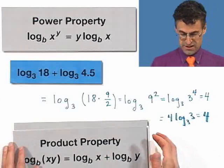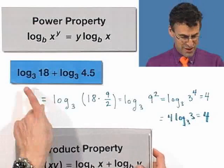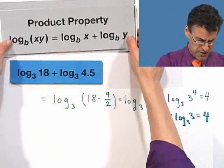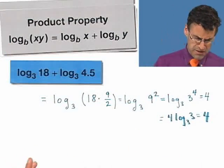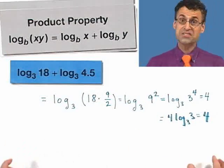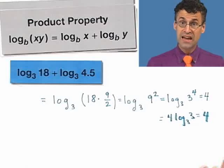So there's lots of ways of getting to it. But all correct roads will lead you to an answer of 4. So in fact, this crazy complicated looking thing, log base 3 of 18 plus log base 3 of 4.5, is just a fancy way of saying 4. Isn't that cool? Awesome.